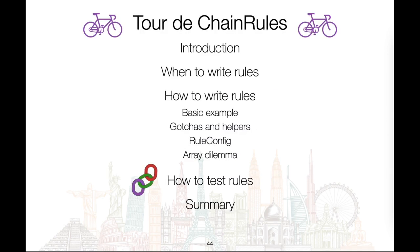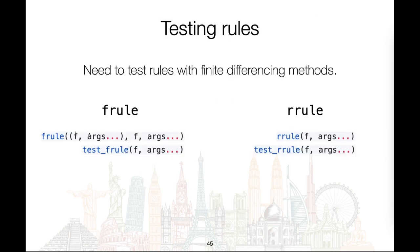We are now past the difficult stuff and it's time to move on to testing rules with finite differencing methods. You really need to test your rules using finite differencing, because any misunderstanding you had when writing the rule could also creep into your tests and deceive you into thinking the rule is correct. ChainRulesTestUtils provides two functions — test_frule and test_rrule — which make finite differencing testing really easy.